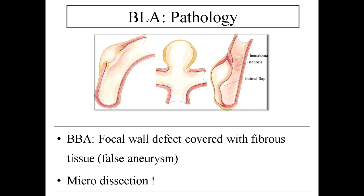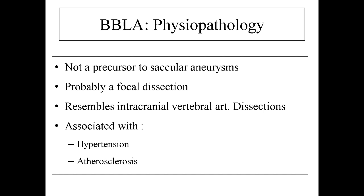To understand how it works: this is a focal defect of the wall. Unlike a true aneurysm where you can see at least two layers of the arterial wall, here this is a hole — it leads to a false aneurysm, also called microdissection. It's important to know that a blister is not a precursor to a circular aneurysm; it's probably a focal dissection. It looks like other dissections and is often associated with hypertension and atherosclerosis.